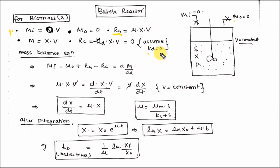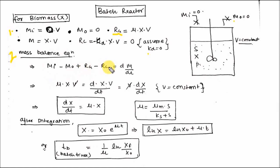Here we assume KD equal to 0. The second step is to write the mass balance equation: Mi minus Mo plus Rg minus Rc equal to dm by dt. Please learn this carefully — if you understand this concept, then substrate consumption and product formation equations for fed-batch or continuous processes can easily be derived. Put the values of Mi, Mo, Rg, and Rc here.